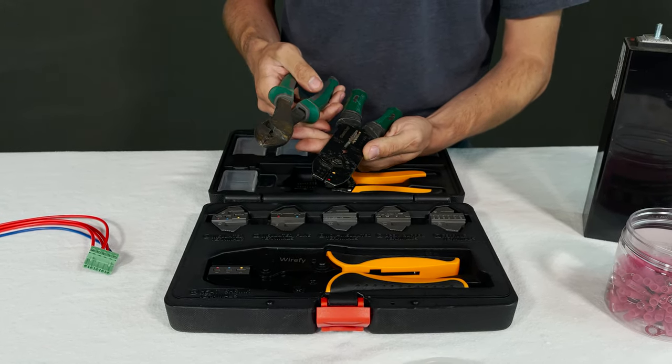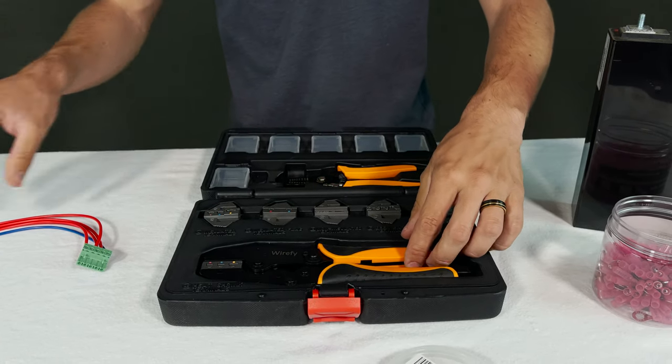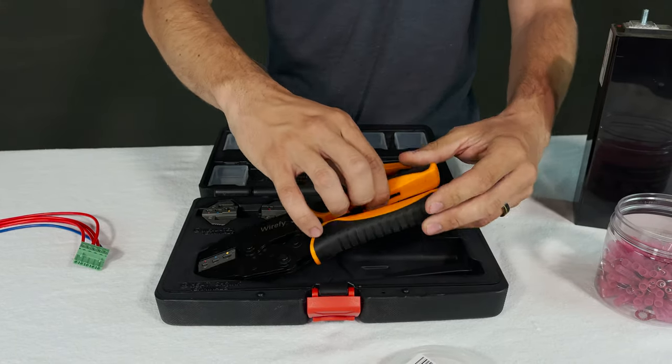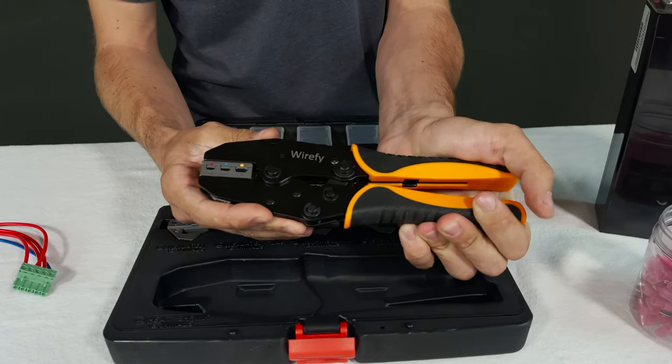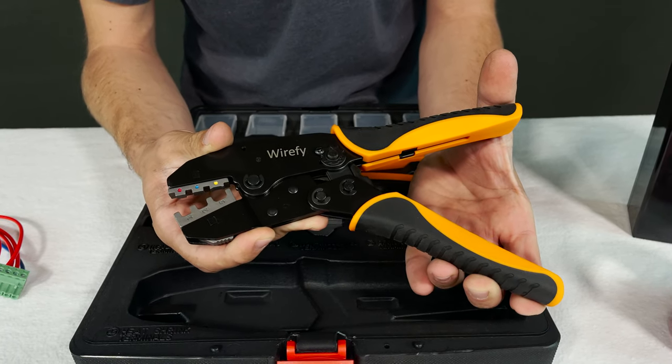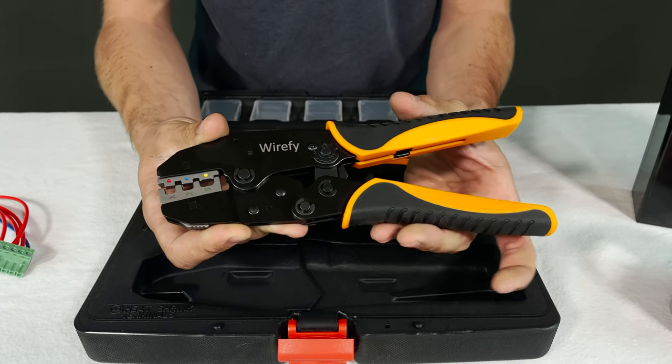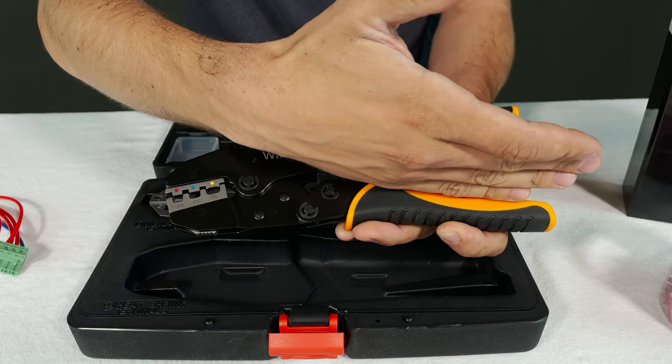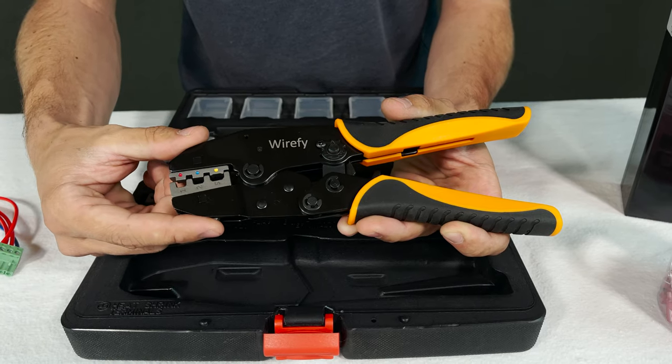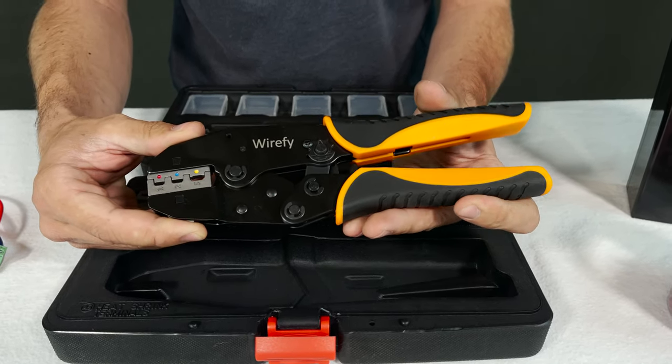Now this tool right here is my new favorite tool because if you look, it's a ratcheting type, it's like a compound. So a long way of movement on the handle gives you just a little bit of crimping, which means you have extra leverage from this side that gives you even more crimping force on this side. So you can get really nice strong crimps.